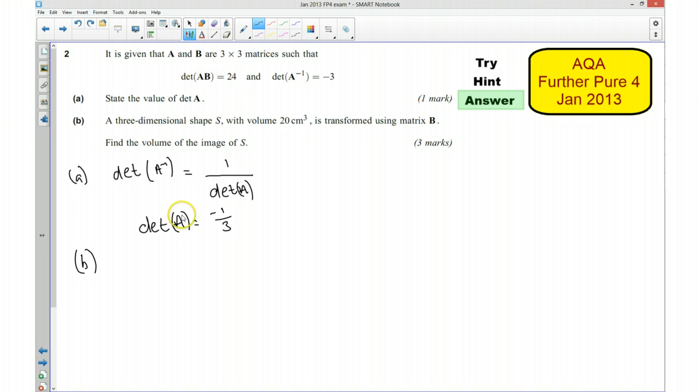Okay, well we know the determinant of A is minus a third, so in order to make the total scale factor 24, I would have to multiply this by a determinant of negative 72. So if I just write that down, the determinant of AB must be equal to the determinant of A times by the determinant of B.